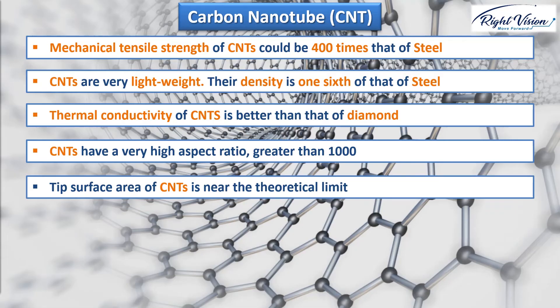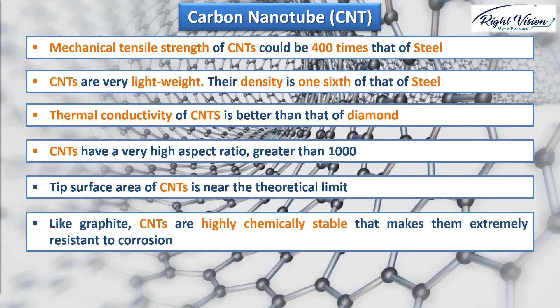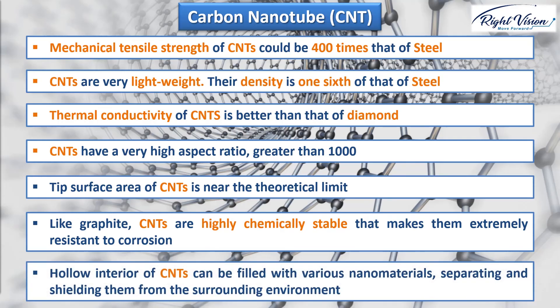Carbon nanotubes have a tip surface area near the theoretical limit. The smaller the tip surface area, the more concentrated the electric field and the greater the field enhancement factor achieved. These features make them ideal as tips for scanning probe microscopes, where an extremely thin, sensitive tip is required to map the surface of a material at the atomic scale. Like graphite, carbon nanotubes are highly chemically stable and resist virtually any chemical impact unless simultaneously exposed to high temperature and oxygen — making them extremely resistant to corrosion. Their hollow interior can be filled with various nanomaterials, shielding them from the surrounding environment, which is extremely useful for nanomedicine applications like drug delivery.